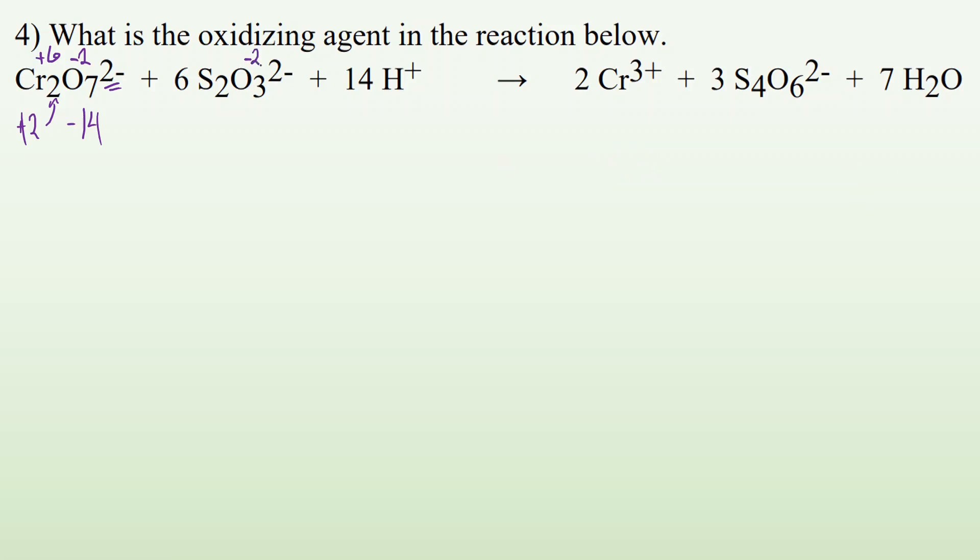So oxygens minus two each. There's three of them. So I have a minus six. If the whole thing is minus two, there must be a plus four charge from the sulfurs. Well, since there's two of them, each is a plus two. Hydrogens, they tell you right off the bat, it's plus one.